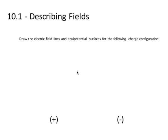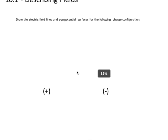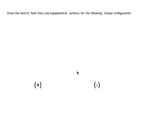I am here with a question in topic 10.1 on field diagrams. We're asked to draw the electric field lines and the equipotential surfaces for the following charge configuration. One positive charge, one negative charge.